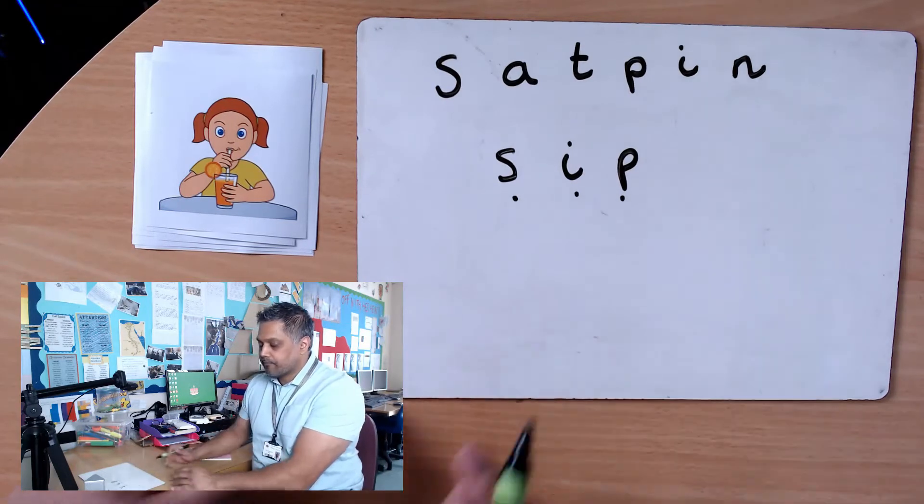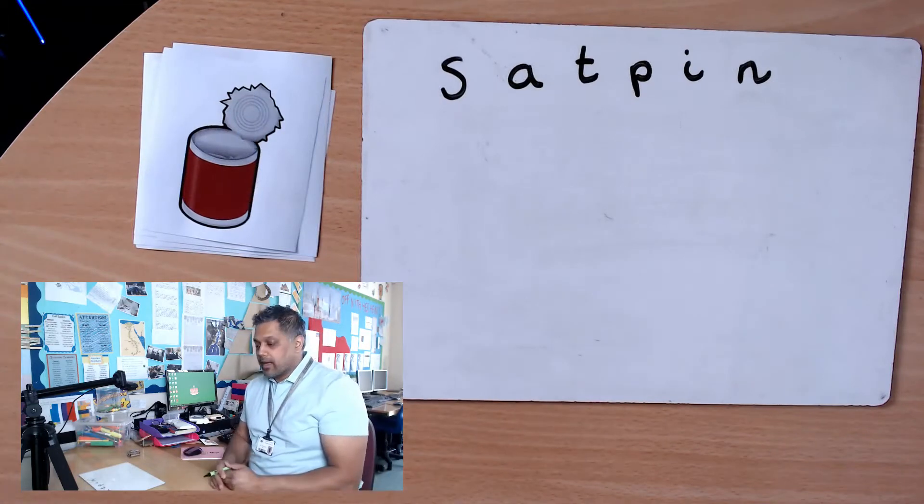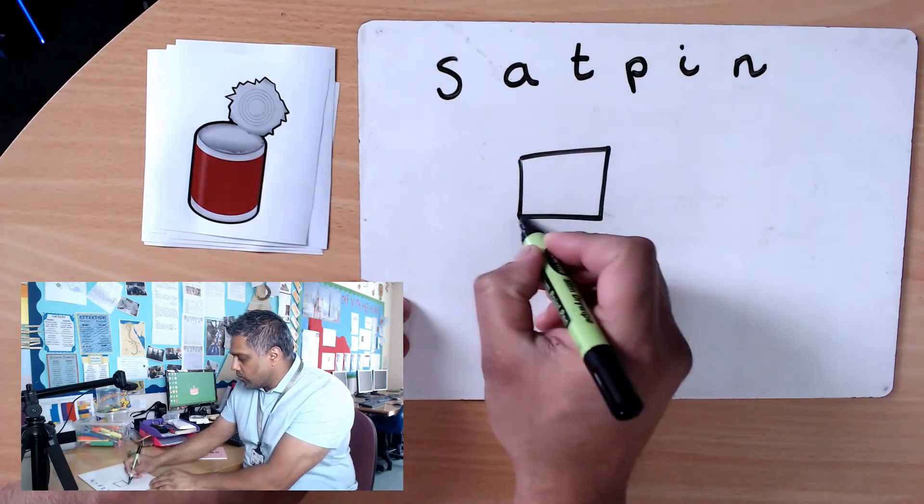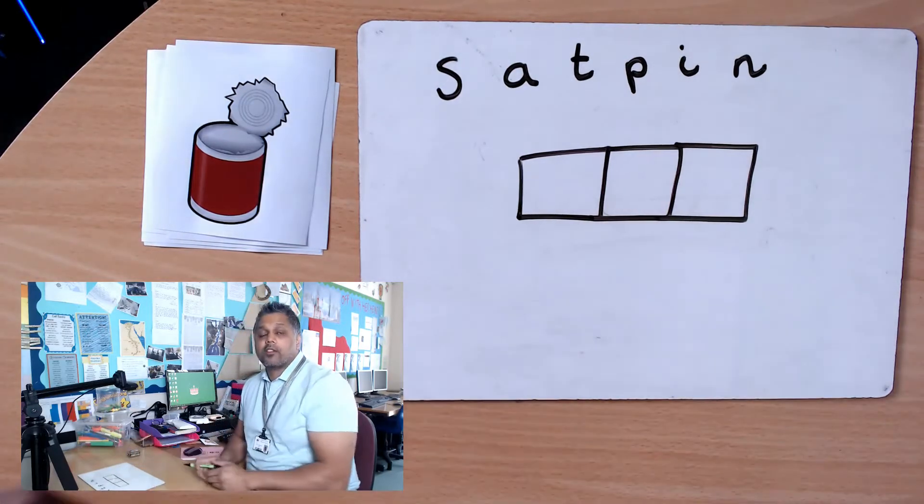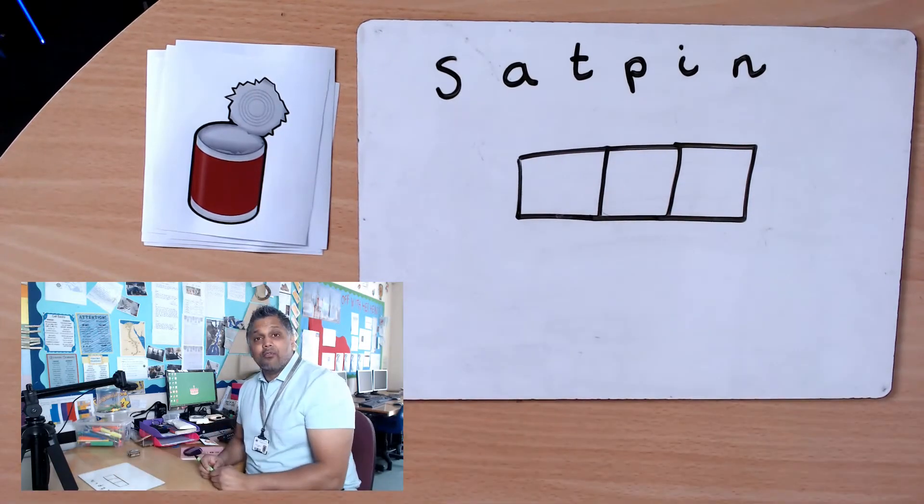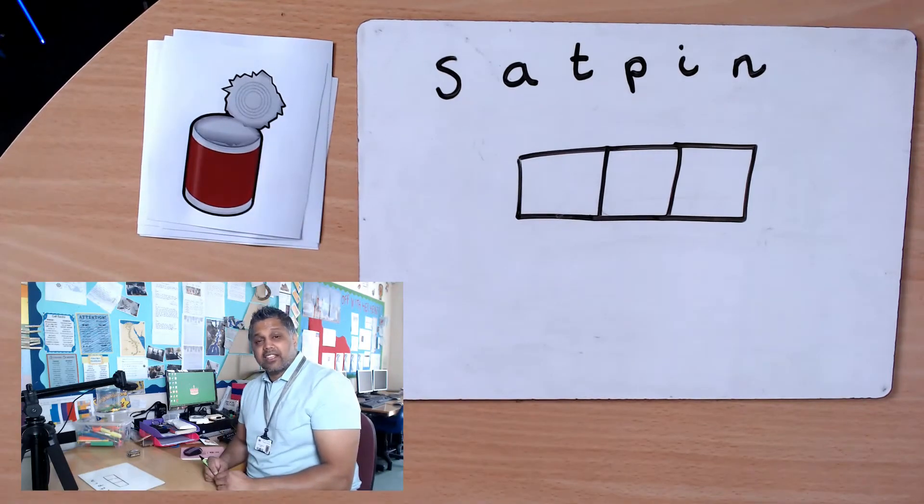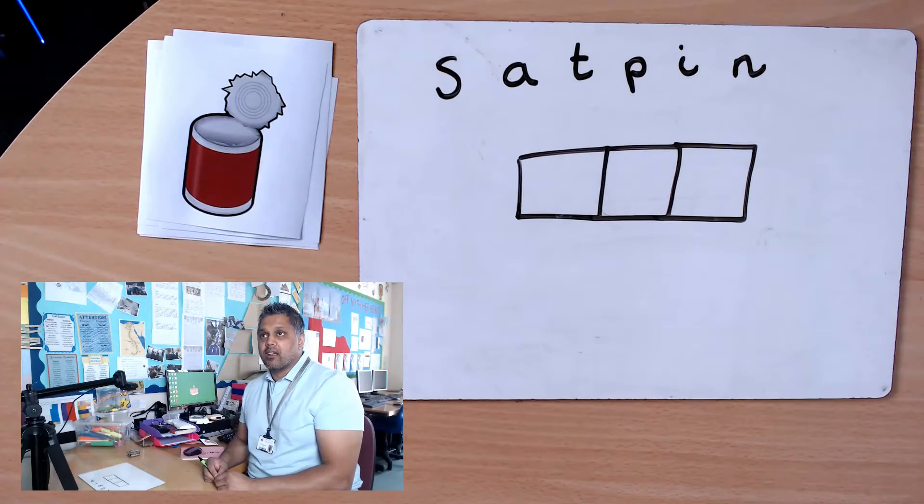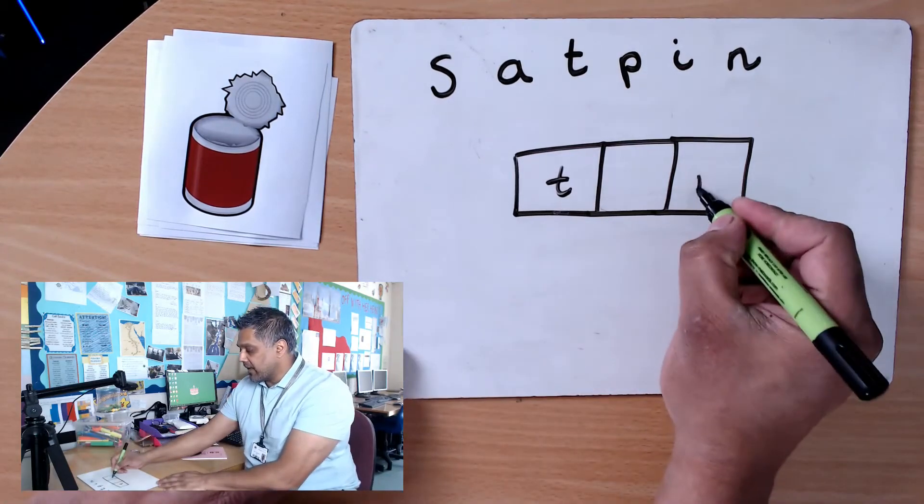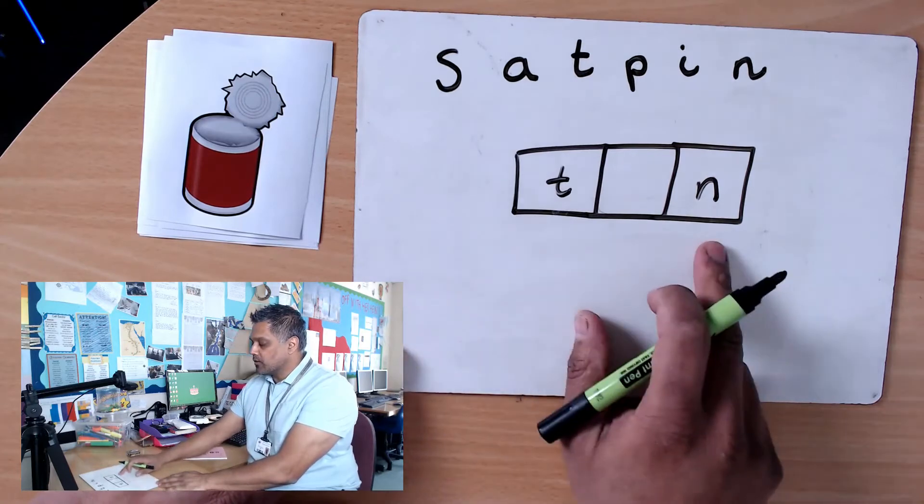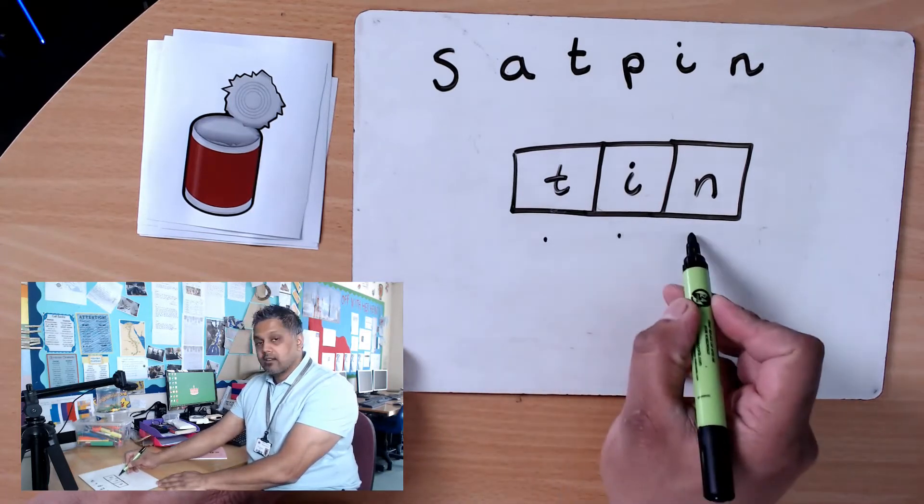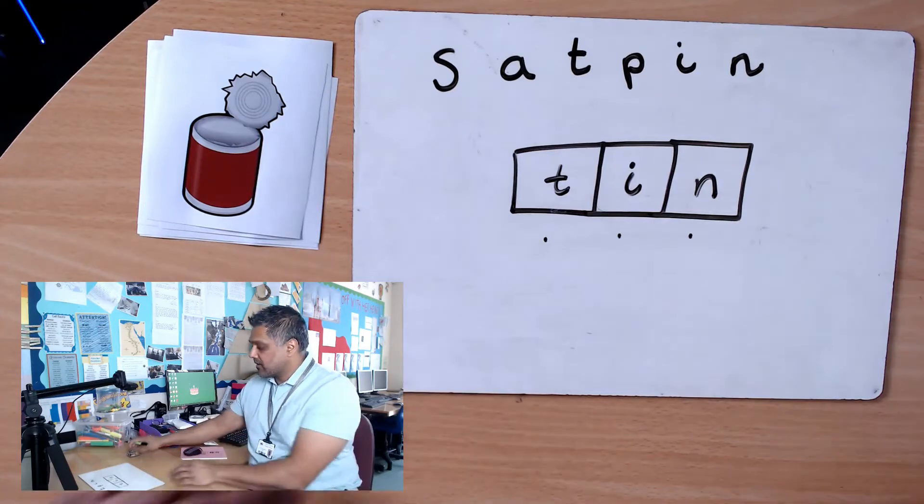We're going to do some more words to segment. Got us another picture here, and what you can do is draw three boxes because the words we're going to go through today segment into three separate sounds. I've got one box for every sound. I've got here is a tin, the word tin. Tin, tin, I definitely got T at the beginning. Tin, tin, I've got an N at the end. So I'm thinking which of my sat pin sounds goes in the middle. Tin, it's going to be an I. Now I check it, blend them together, I get tin. Fantastic, let's try another one.